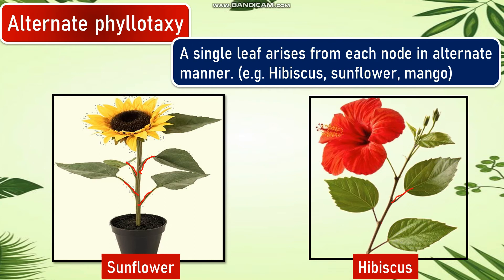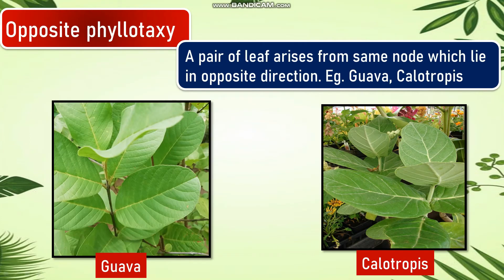Opposite phyllotaxy: a pair of leaves arises from the same node, lying in opposite directions. Examples include guava and Calotropis. Here we can see a pair of leaves arising from the same node, lying opposite to each other, as seen in Calotropis.